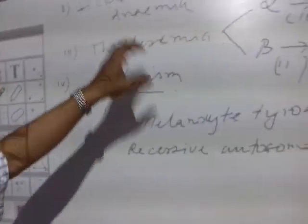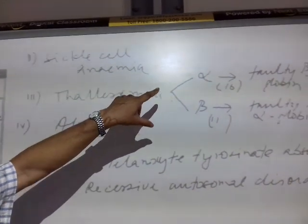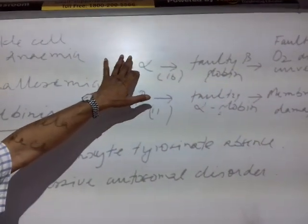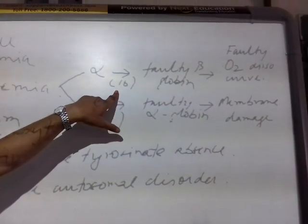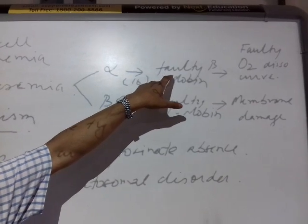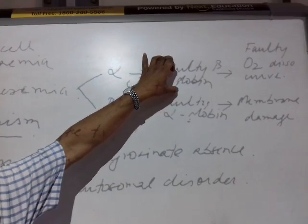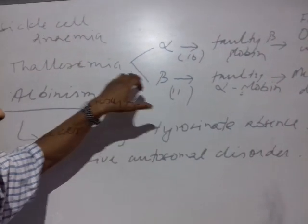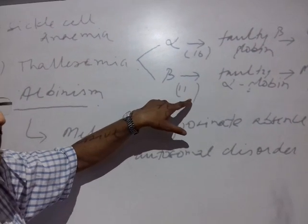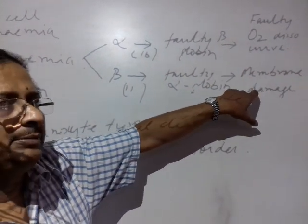Thalassemia is another disorder with two types: alpha thalassemia and beta thalassemia. In alpha thalassemia, there is a faulty chromosome 16. The defect causes faulty beta-globin chains, which leads to faulty oxygen dissociation, membrane damage of the RBC, and hemolysis, resulting in hemolytic anemia.